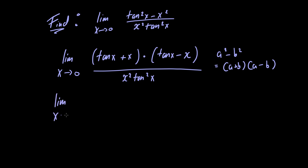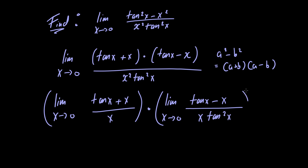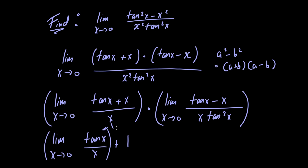We rewrite our limit as the product of two limits: the limit as x approaches 0 of tangent of x plus x divided by x, multiplied by the limit as x goes to 0 of tangent of x minus x divided by x times tangent squared of x. The left-hand limit can be rewritten as the limit of tangent of x divided by x plus 1. As x goes to 0, tangent x over x goes to 1, so this equals 1 plus 1, which is 2.